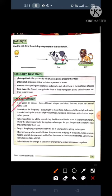Number 2. I make food for the plant. I use sunlight to make food. I also need chlorophyll and water to make food by the process of photosynthesis. I prepare oxygen, gas and a type of sugar called glucose. So, what is this? I do this part? What is this?